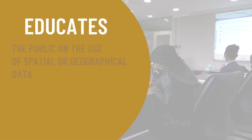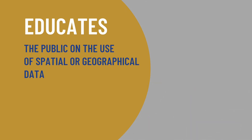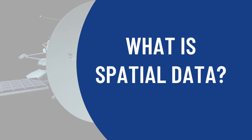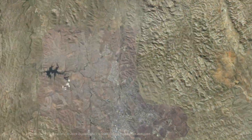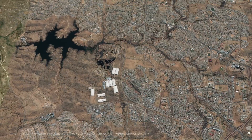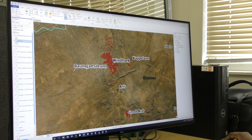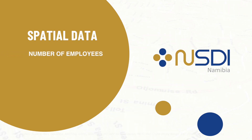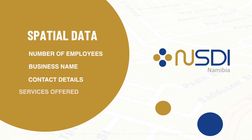The NSA also educates the public on how statistics and spatial data, also called geographic data, are used. But what is spatial data? Spatial data provides information about the specific locations of things on the Earth and their associated characteristics. For example, spatial data provides information not only of a particular location, such as a business, but also the number of people that work there, the name of the business, contact details and the services such a business offers.